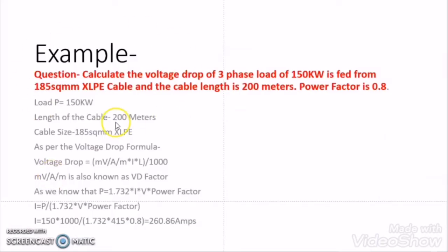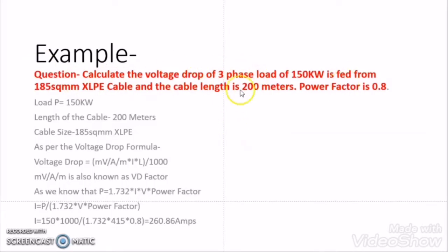Let us take one example to understand this topic very clearly. Calculate the voltage drop of a 3-phase load of 150 kW, fed from a 185 square mm XLPE cable. The cable length is 200 meters and the power factor is 0.8. First of all, collect the information available from the question: this is a 3-phase load, the load P = 150 kW, length of cable = 200 meters, and cable size is 185 square mm XLPE.